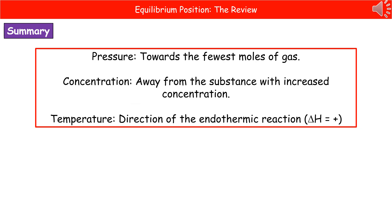Just to summarize then: we've got these three conditions and the direction they move the equilibrium position. If we increase the pressure, it goes towards the fewest moles of gas. If we increase the concentration, it goes away from the substance with the increased concentration. And if we increase the temperature, it goes in the direction of the endothermic reaction, which is the one with the positive delta H.